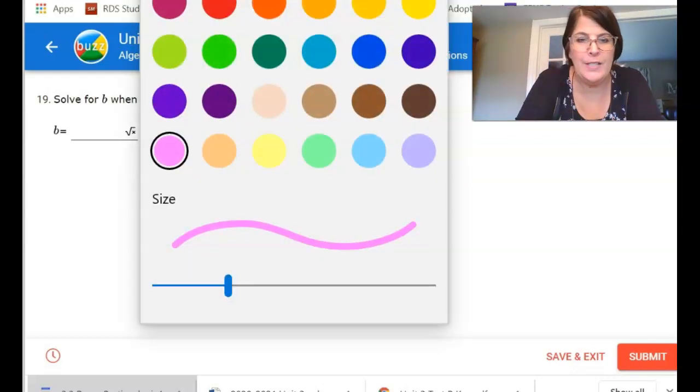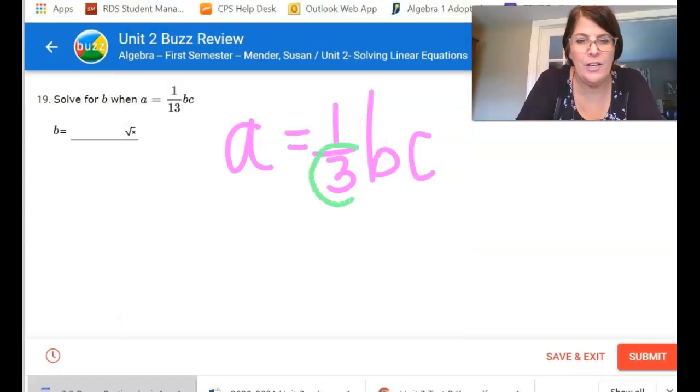We're looking at is we see this fraction, this one-third. It's the thing that makes this the most stressful, so we're gonna get rid of something that's in the denominator by multiplying both sides by 3.